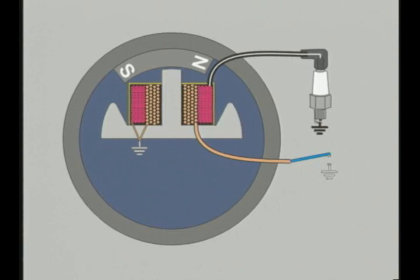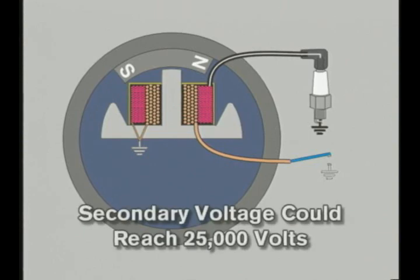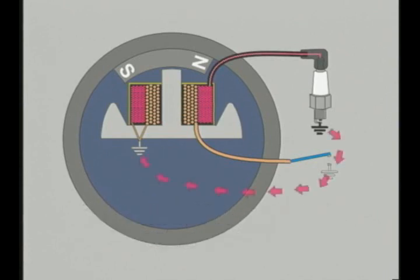Because there are so many more secondary windings, the induced voltage is many times higher, up to 25,000 volts. The spark plug is connected in series between the secondary windings and ground. The rapid surge of voltage causes current to arc across the electrodes at the tip of the spark plug.